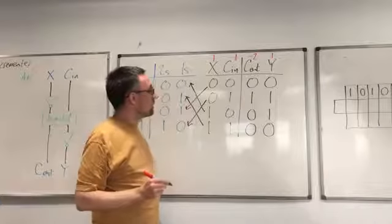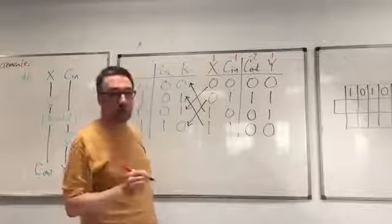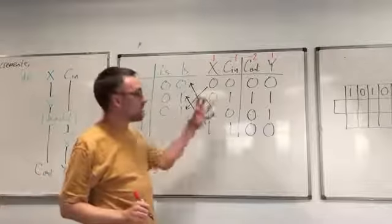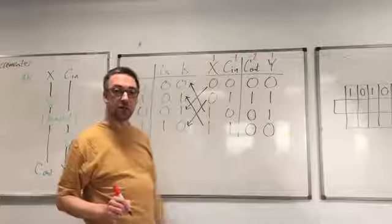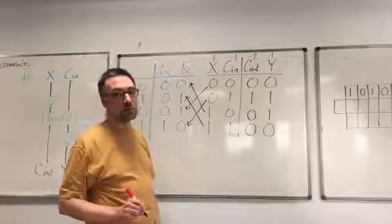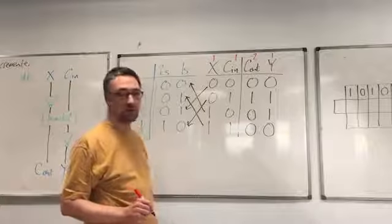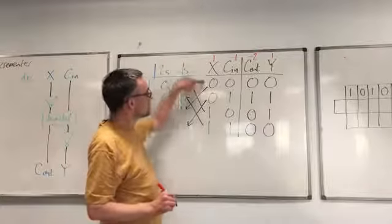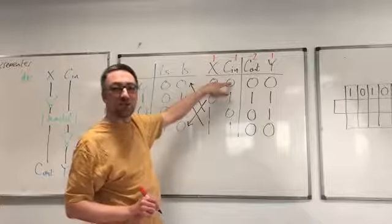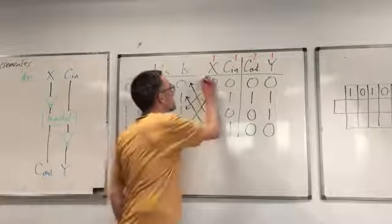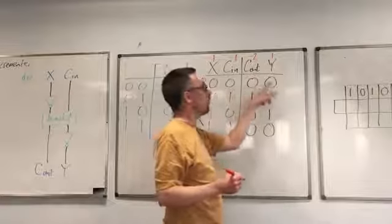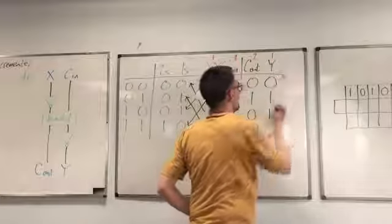We're told it might be good to check that Desmond's decrementor really is an adding circuit with these place values. We add up the total place value of the inputs and compare it with the total place value of the outputs. In the first row, we have no 1s and no minus 1s coming in, giving us 0. On the output, we have no minus 2s and no 1s, so that's also 0.